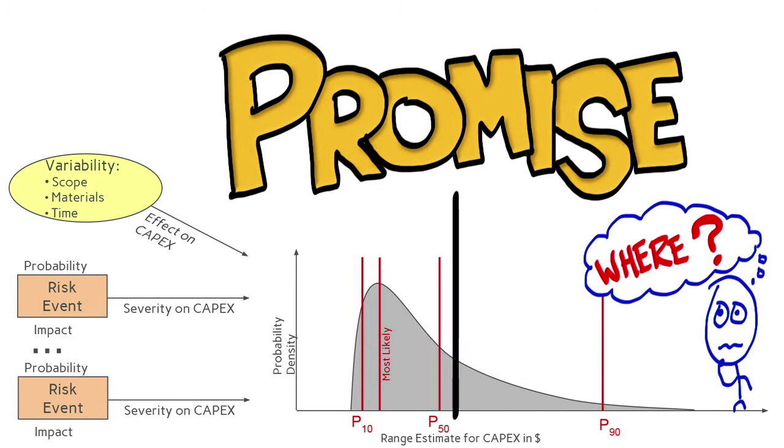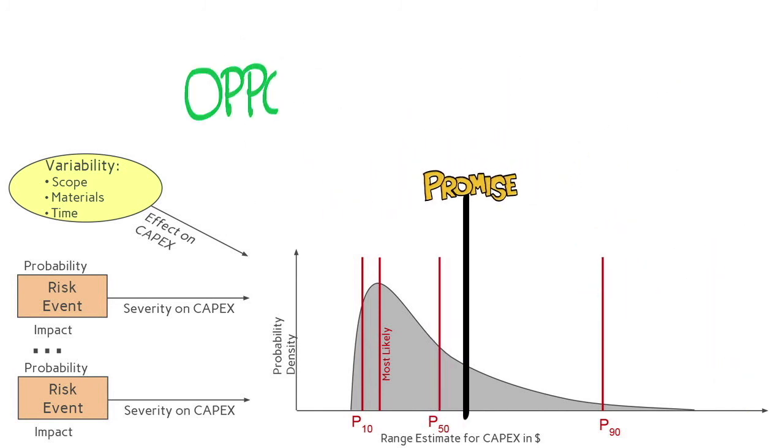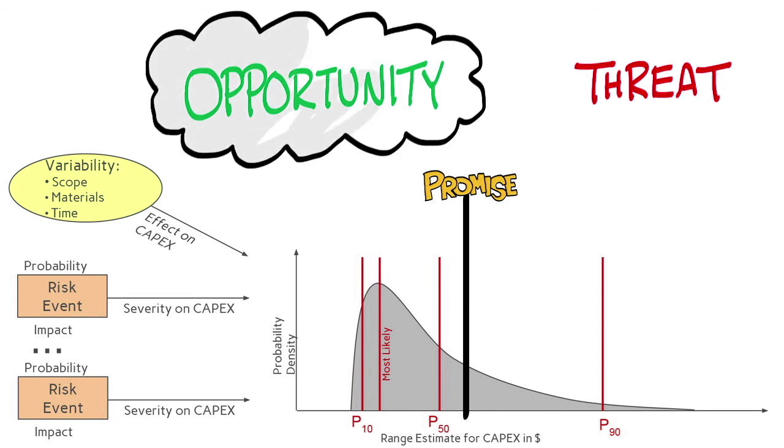Regardless of the precise choice, it is with respect to this promise that the ideas of opportunity and threat are created. We can think of opportunity as the possibility of doing better than the promise.